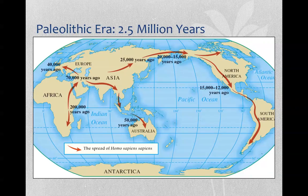In your McClellan and Dorn, they'll talk about the transition from Paleolithic — Old Stone — to Neolithic — New Stone. The Paleolithic era is a very long time period that in a class on history we just don't have time to get into, because this is truly prehistoric. This is a time period before there was historical record keeping, at least in the method that we think of historical record keeping.